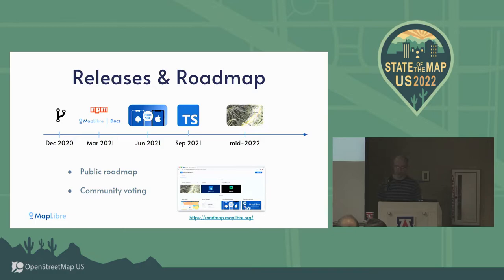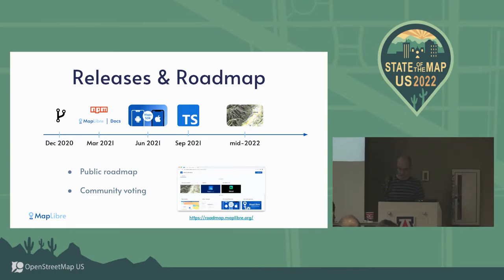Releases and roadmaps: as you can see, we have the 3D roadmap targeting sometime mid-2022. All this data is public. There's a link at roadmap.maplibre.org - most of this information is on maplibre.org.